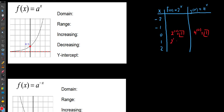Plugging in x = 1: 2^1 = 2 and 4^1 = 4. When you plug in 1, you always get the base value back, whatever the base is. On our parent function graph, this point is labeled (1, b), where b is the base.